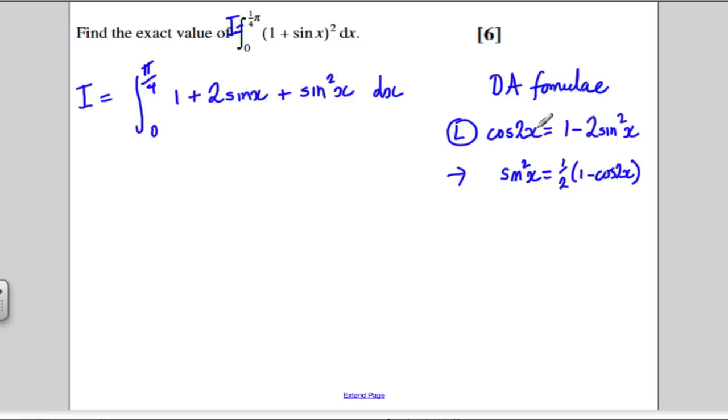Just notice the double angle formula. Cos 2x, that's double that angle. If that was 4x, that would be 2x. It's always double. So instead of integrating sin² x, I'm going to substitute in this here and integrate that instead so that my integral actually changes to the following. The integral between 0 and π/4 of 1 + 2 sin x, and I'm going to times this half out, plus a half, and then minus a half cos 2x, all with respect to x.